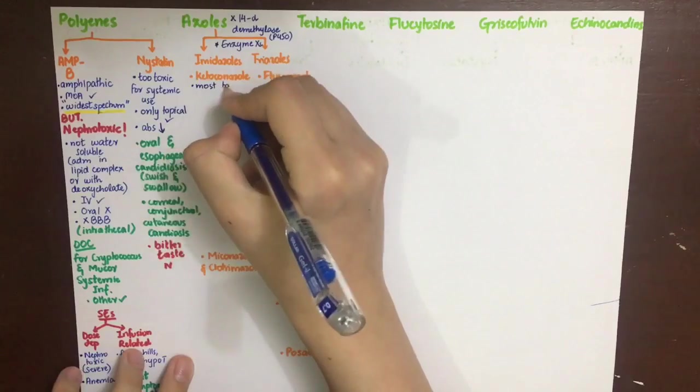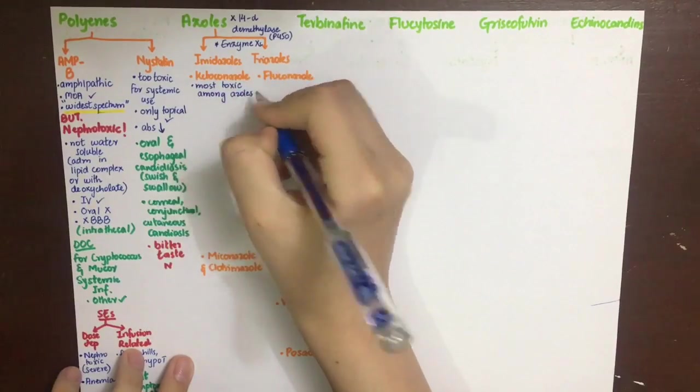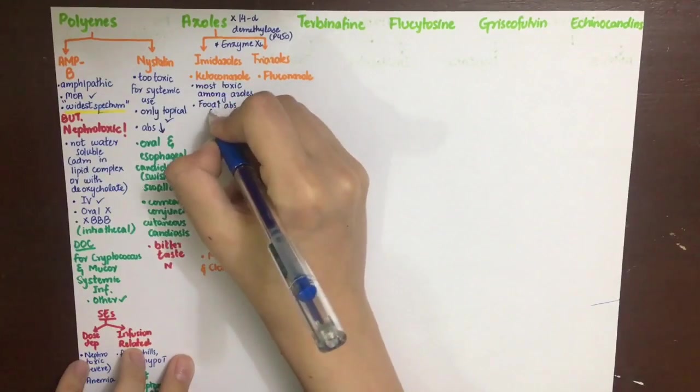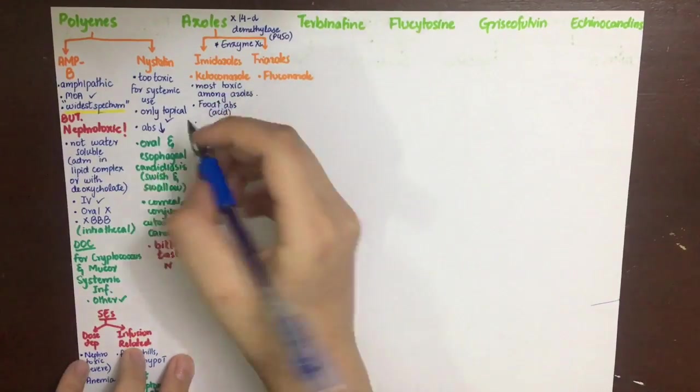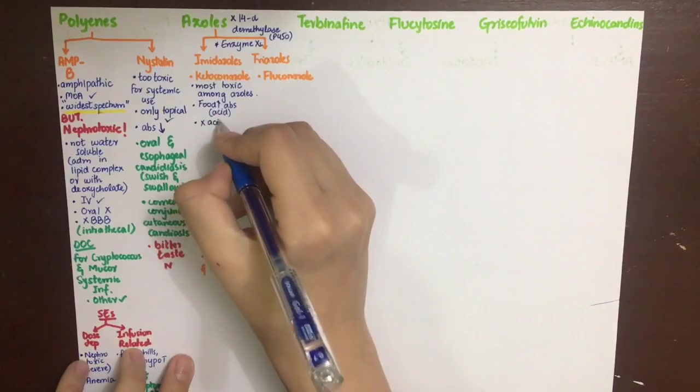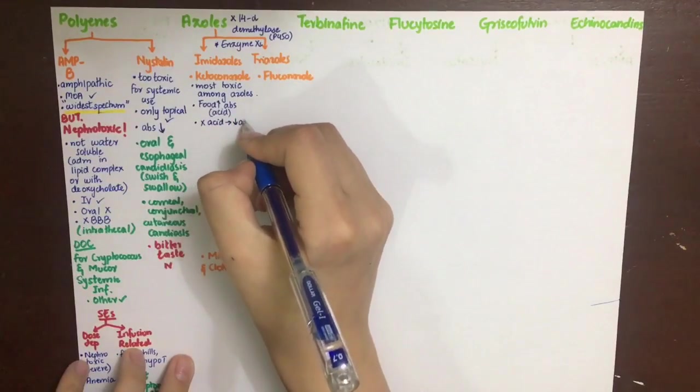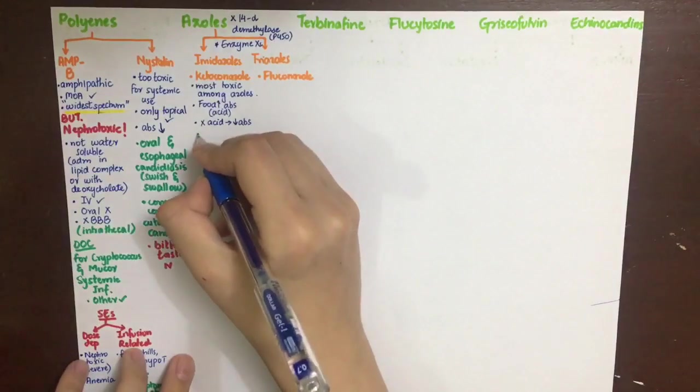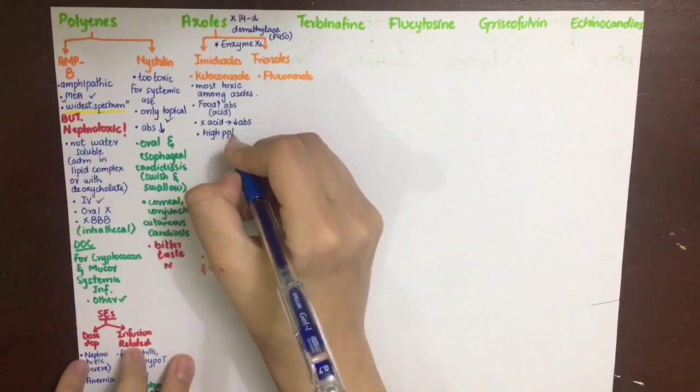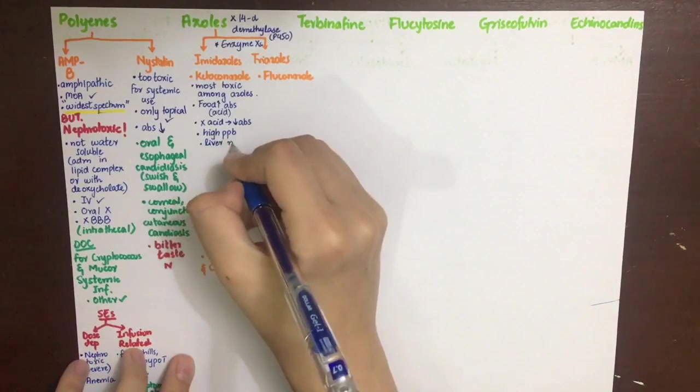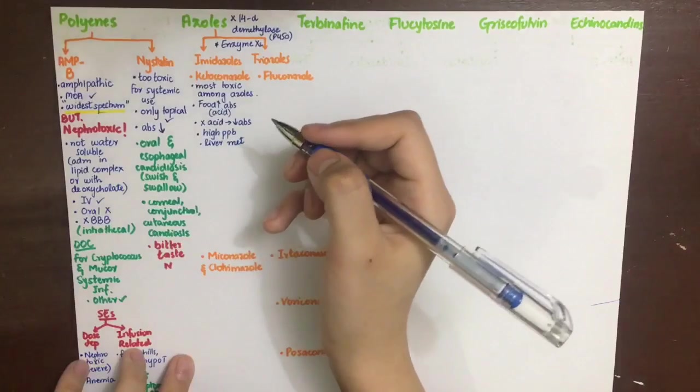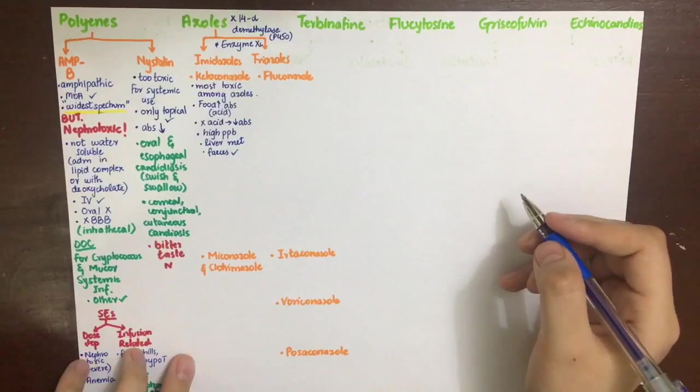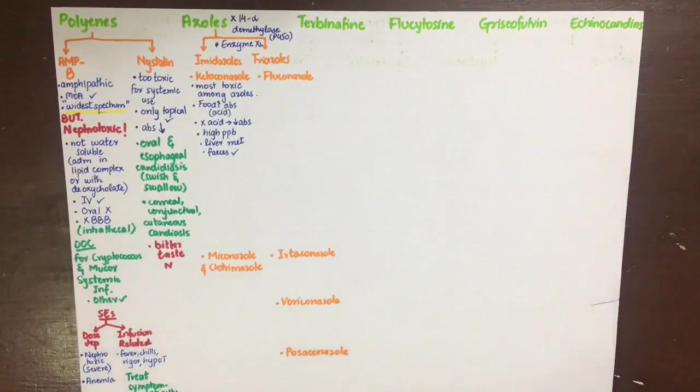Ketoconazole is the prototype imidazole and is the most toxic among all azoles. It can be used topically, and for systemic use it has been mostly replaced by triazoles. Increased acid increases its absorption, while decreased acid will decrease its absorption. It has high plasma protein binding, is metabolized in the liver, and excreted in feces mostly. An important side effect to remember is its inhibition of adrenal corticoid synthesis.